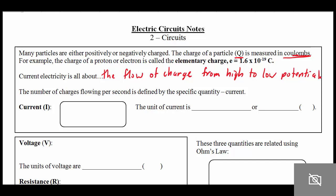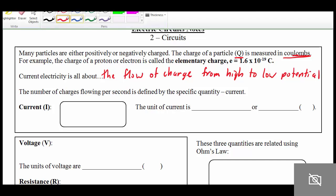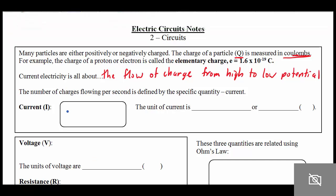The number of charges flowing past a point every second is defined as a specific quantity that we call current. We can define current, which we call I, as equal to Q, the amount of charge, per time period. And the unit of current is therefore Coulombs per second, which we define as something called the ampere, more commonly just called amps, with the symbol A.